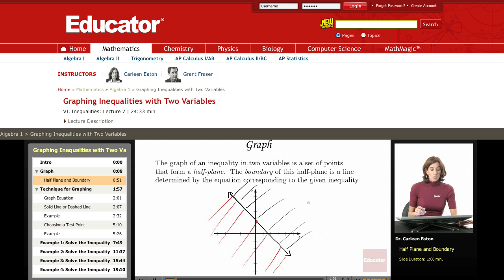Therefore, in order to graph an inequality in two variables, you're going to need to find this line, and you're also going to need to figure out which half plane contains the correct set of points. Right now, though, I'm just talking about, in general, this is what the graph is going to look like.